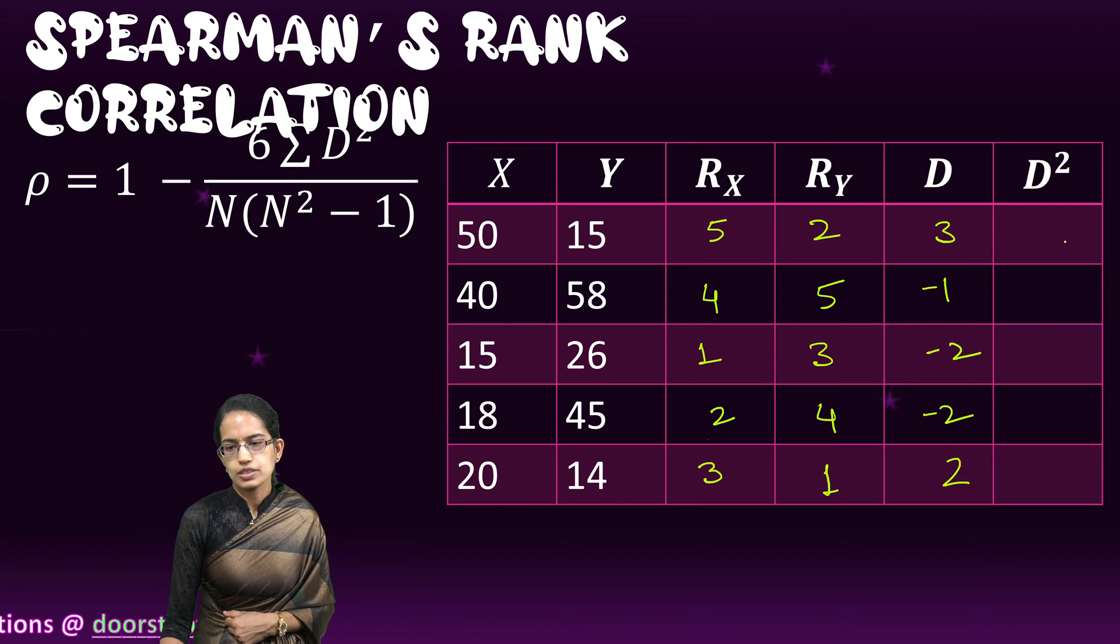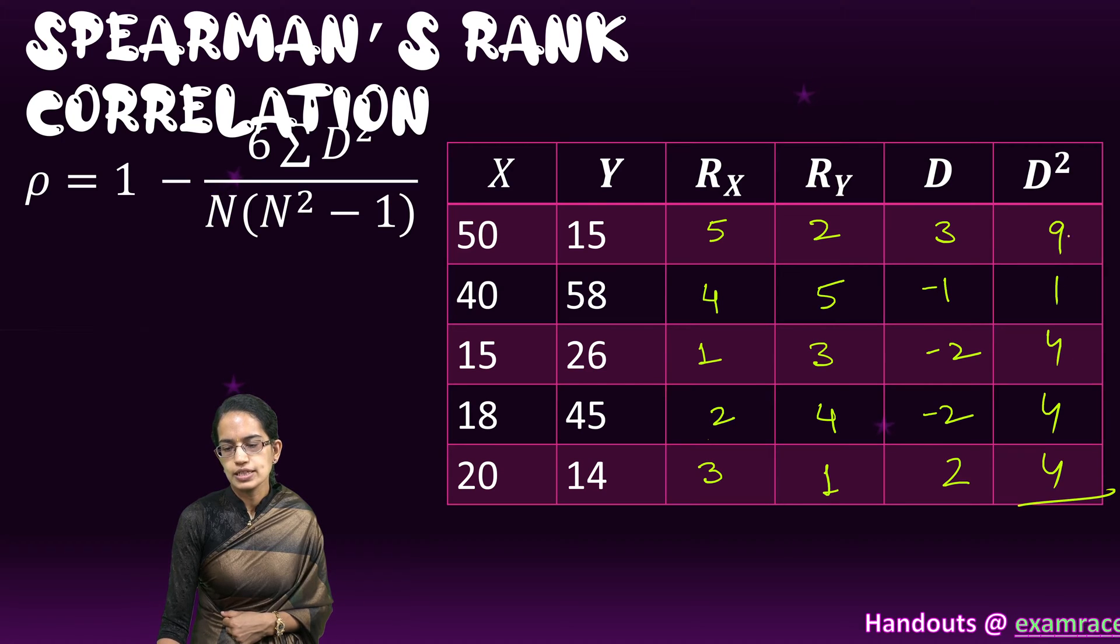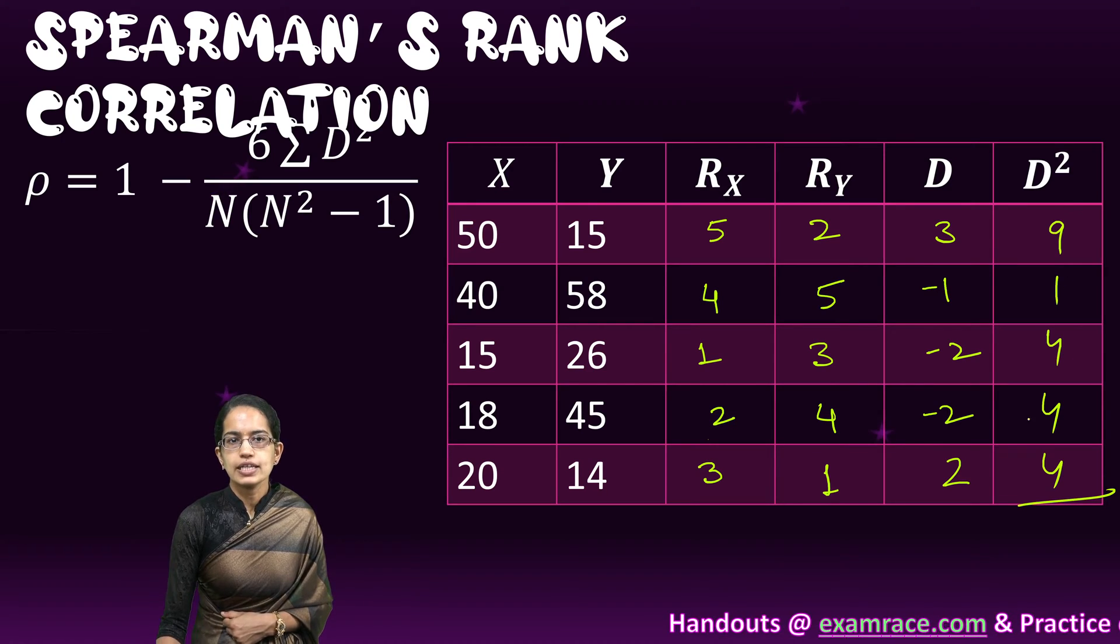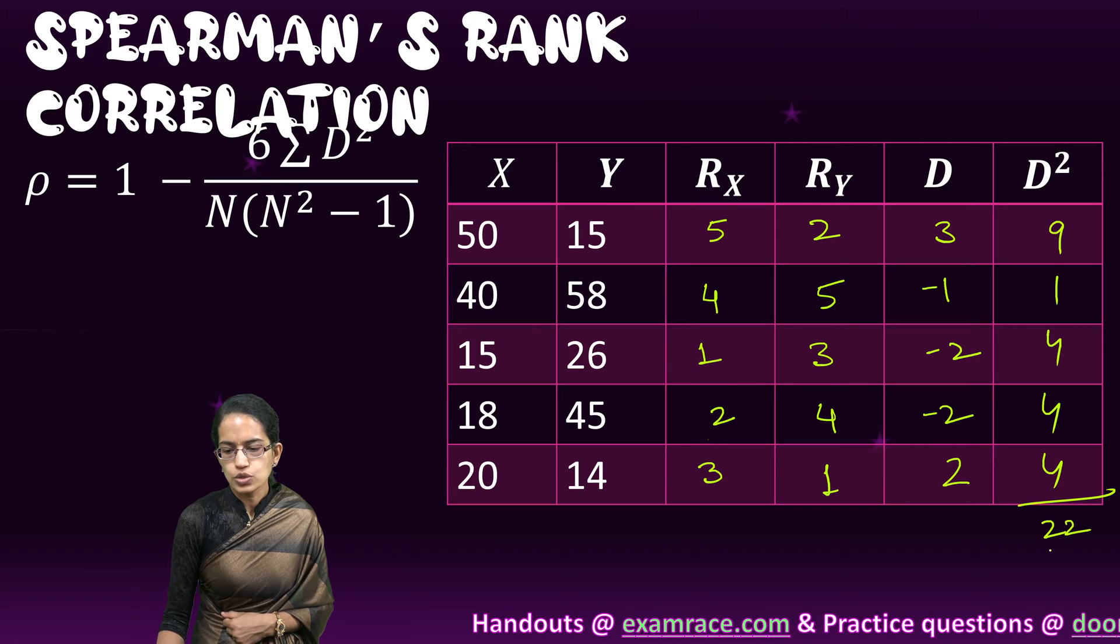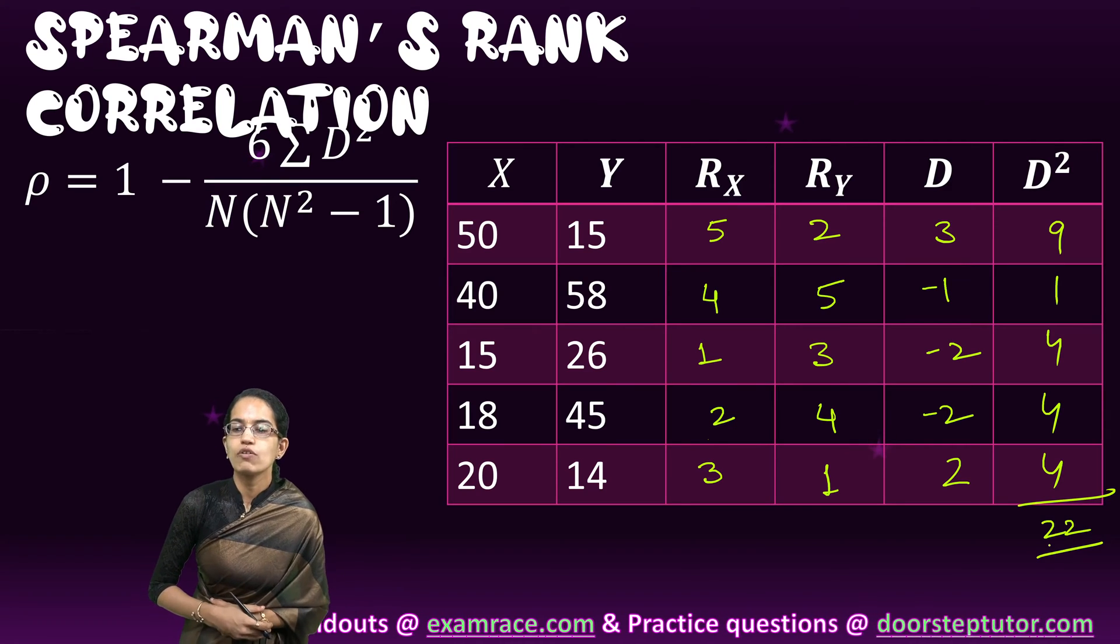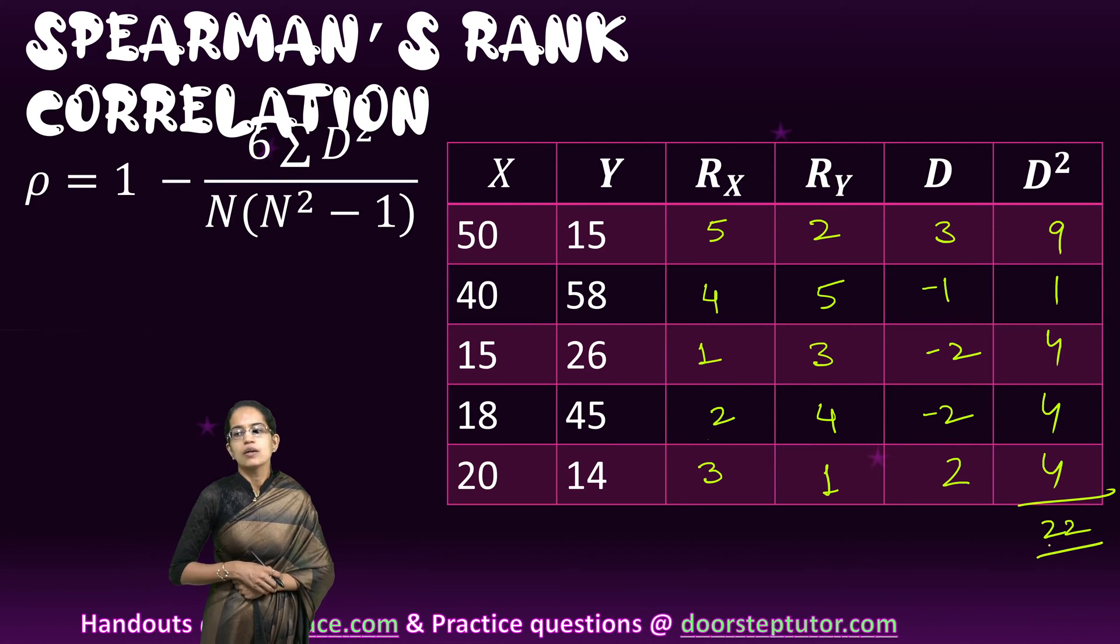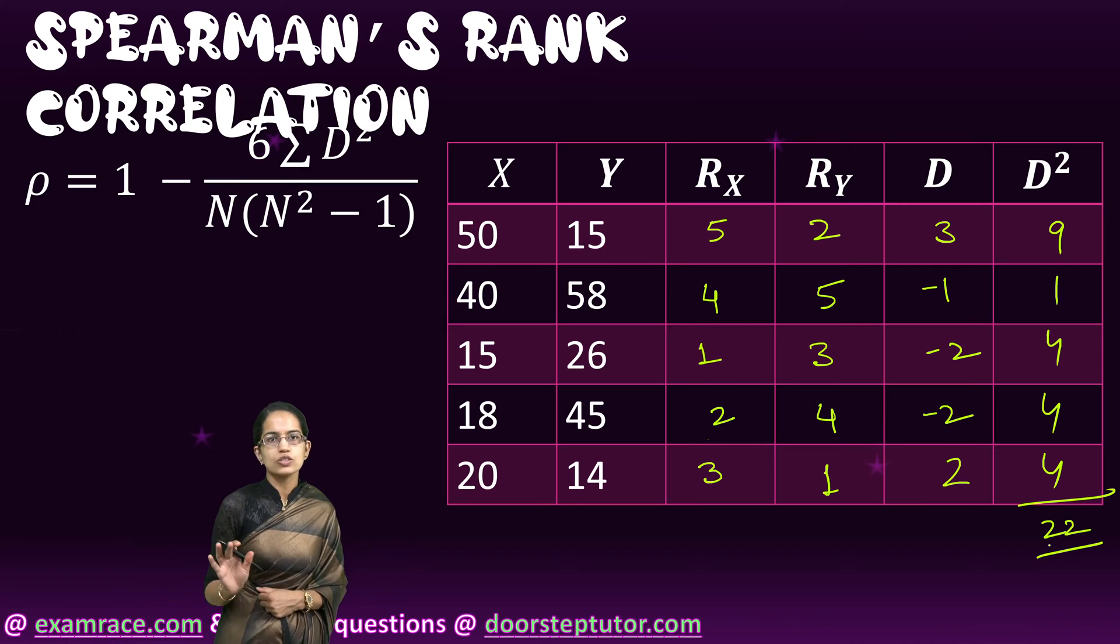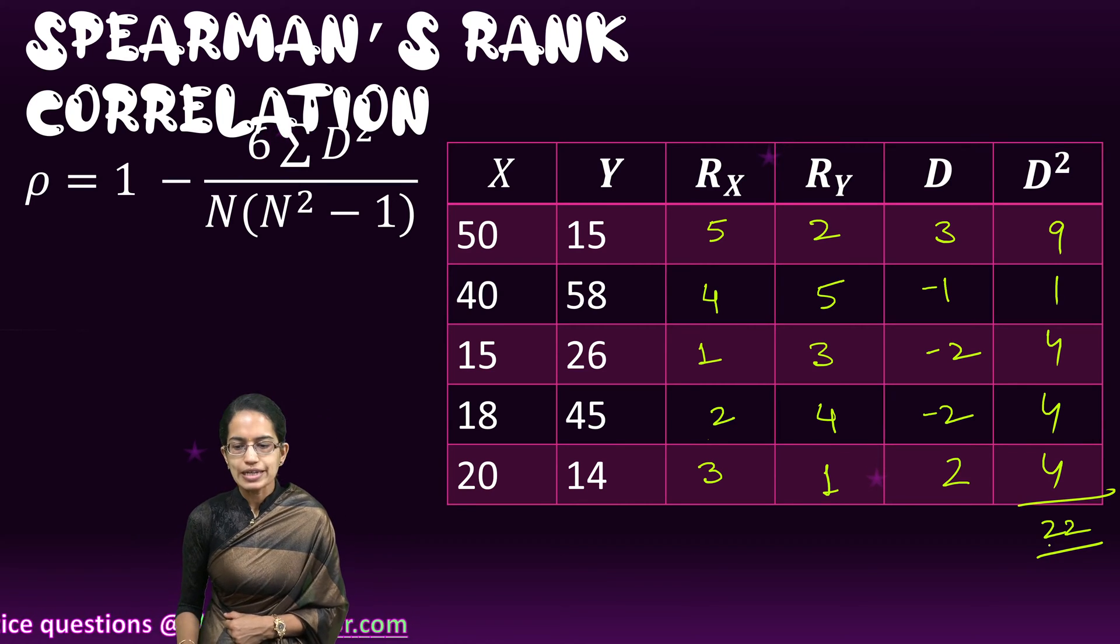I squared the differences. So it is 9, 1, 4, 4, 4. So 4 plus 4 is 8, plus 4 is 12, 12 plus 1 is 13, 13 plus 9 is 22. So I have summation of d squared. The difference between the two sets of rank, the square of those and the summation of those turns out to be 22.